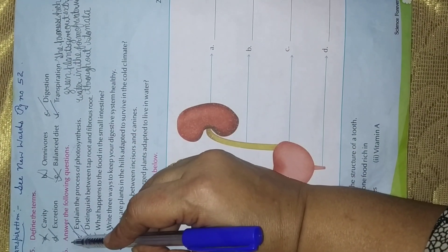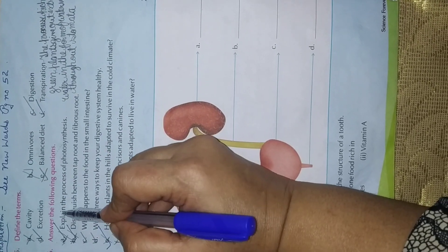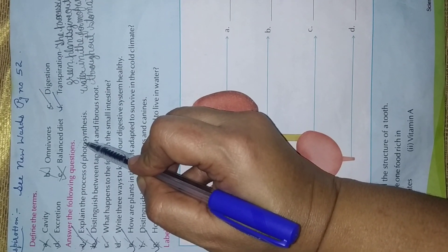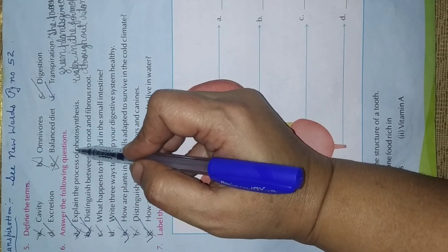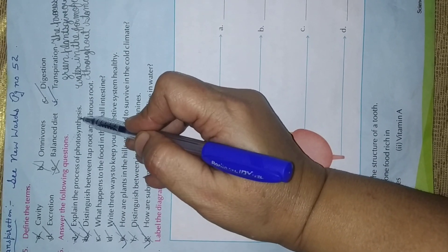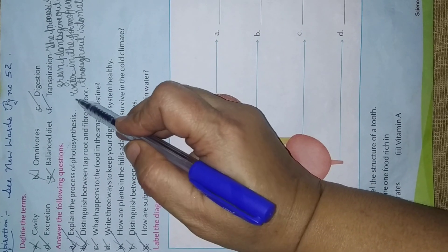Next question number 6. Answer the following questions. A. Explain the process of photosynthesis. You know what is photosynthesis? The process by which green plants make their own food in the presence of air, water and sunlight. It is called photosynthesis. Understood?